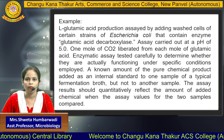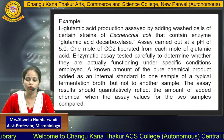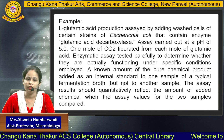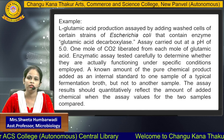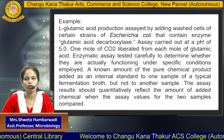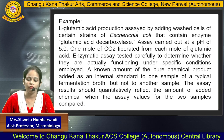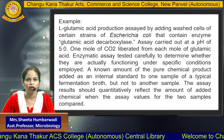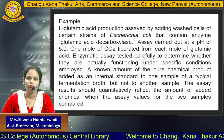An unknown amount of the pure chemical product is added as an internal standard to one sample of a typical fermentation broth, but not to another sample. If we are dealing with the unknown concentration of glutamic acid, we should also run a standard using standard glutamic acid under the same conditions. The assay results should quantitatively reflect the amount of added chemical when the assay values for the two samples are compared, and only then can we determine the concentration of the fermentation product.